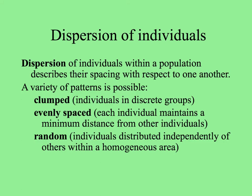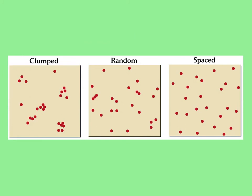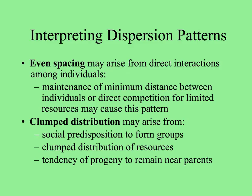Dispersion means how individuals are distributed in a population with respect to one another. There are three basic patterns: individuals could be in clumps across the landscape — sometimes called a contagious distribution; they could be hyper-dispersed or evenly spaced, as far apart from each other as possible; or they could be randomly distributed, independent of the location of others, within a homogeneous area. In this picture, we see clumped on the left, random in the middle, and evenly spaced — also called hyper-dispersed — on the right.